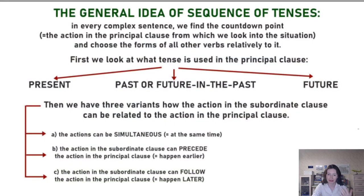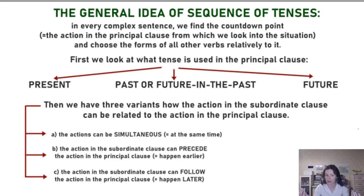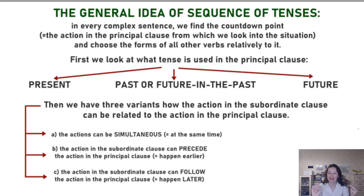The general idea of sequence of tenses is that in every complex sentence we find some first point — some first action, the countdown point. It's usually the action in the principal clause, because we start looking at the situation from there and take it as our point of beginning.